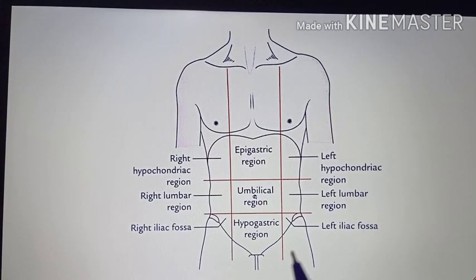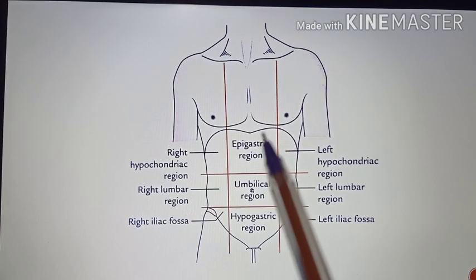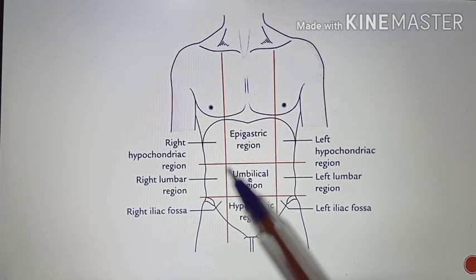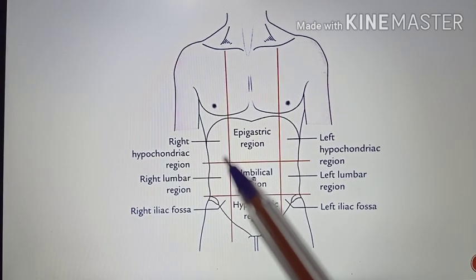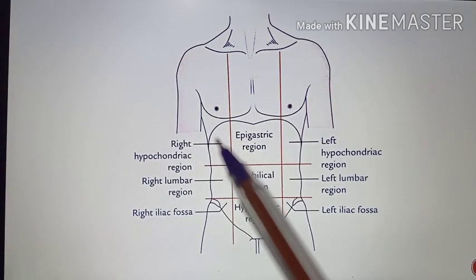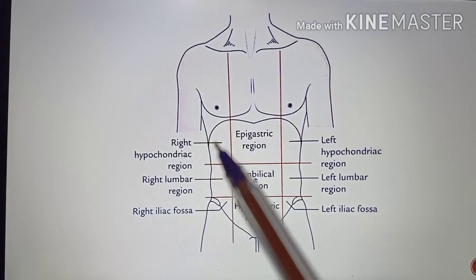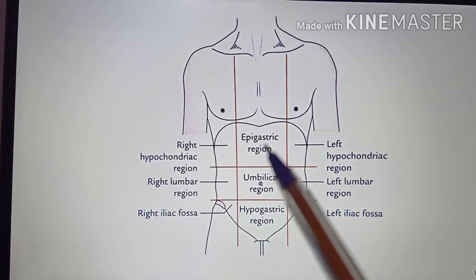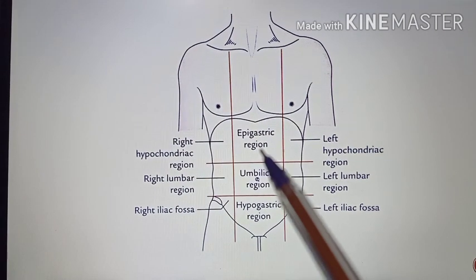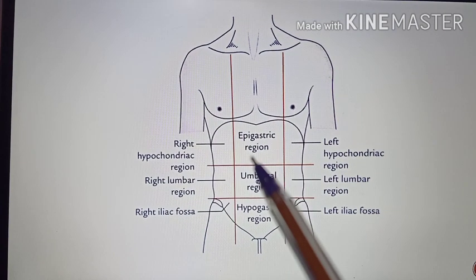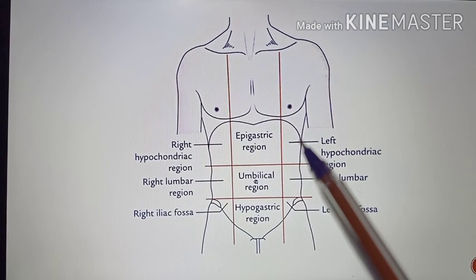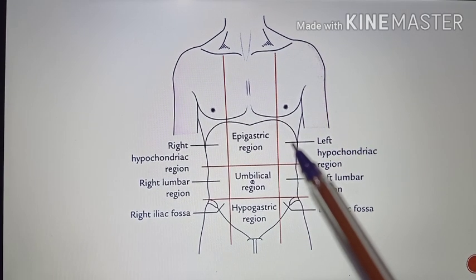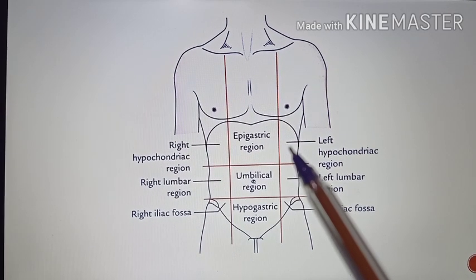Knowledge about the nine regions will help us know the exact source of pain. If there is pain in the right hypochondriac region, it is due to the gallbladder or biliary apparatus. If the pain is in the epigastric region, it is due to the stomach and duodenum. If it is in the left hypochondrium, it is either due to the pancreas.